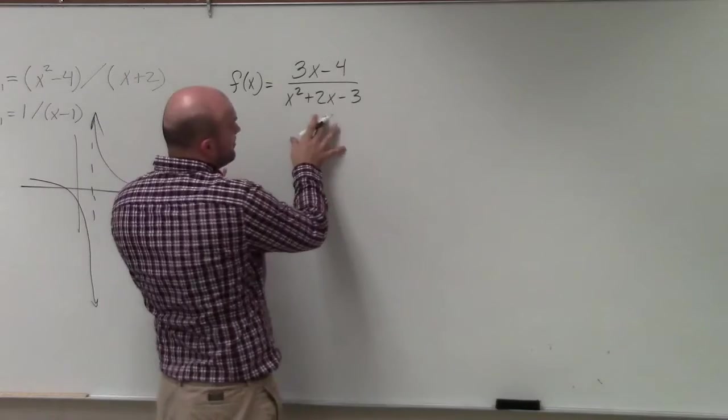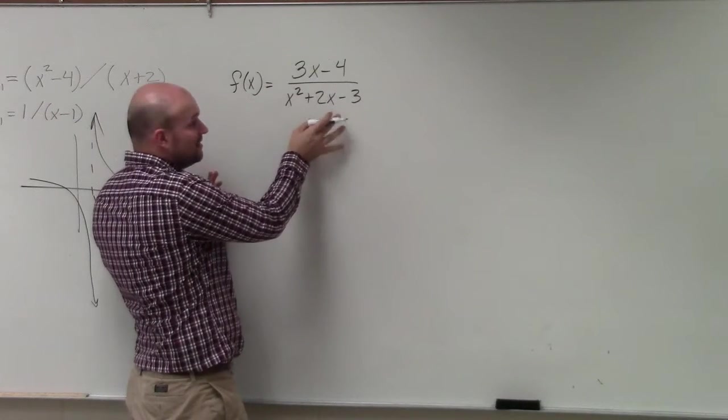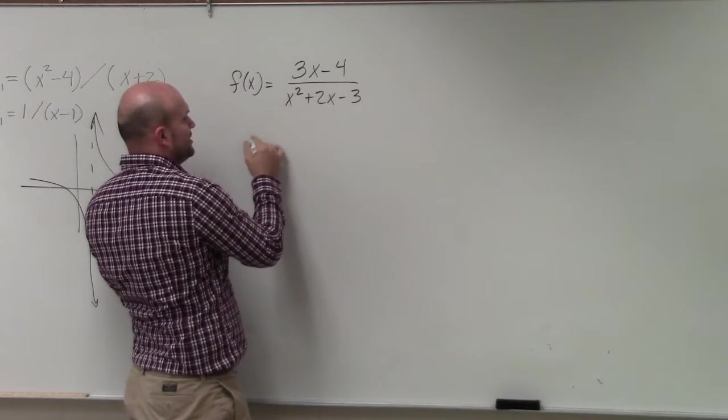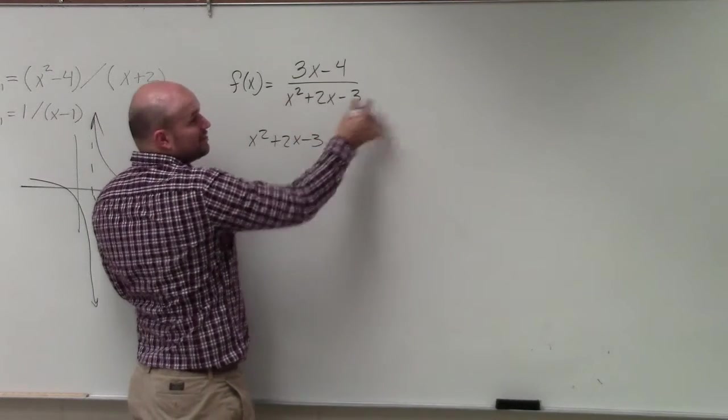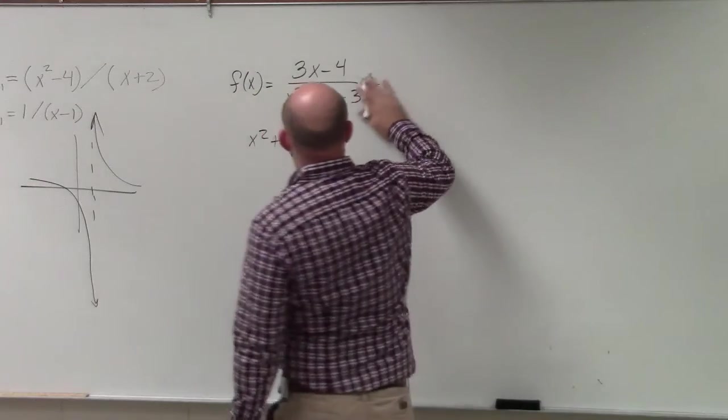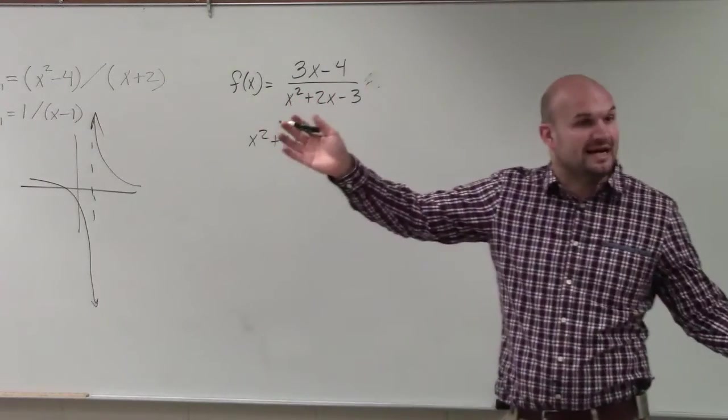So again, first thing, yes, we could identify this. We know our discontinuities are going to be whatever makes our denominator equal to zero. However, we want to make sure we can't factor anything out, because if we can factor them out, then they're a hole, not an asymptote, right?